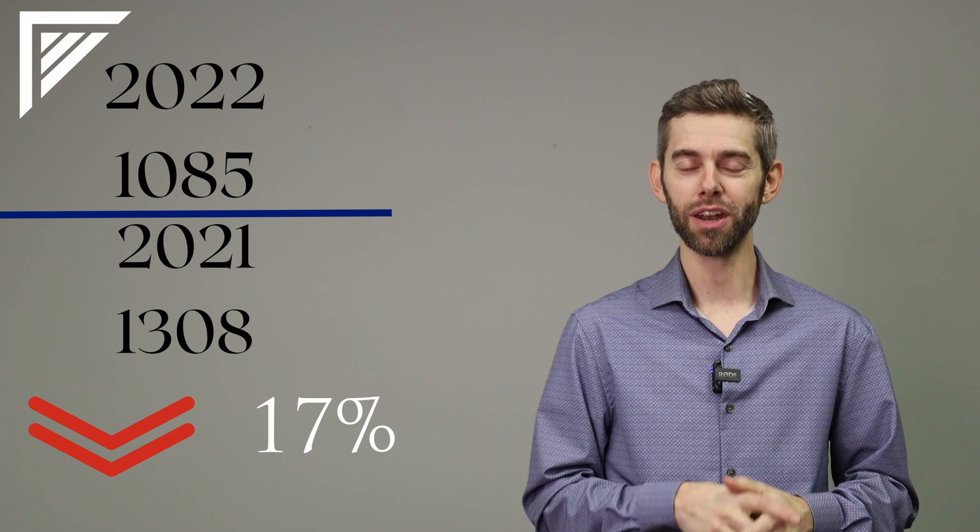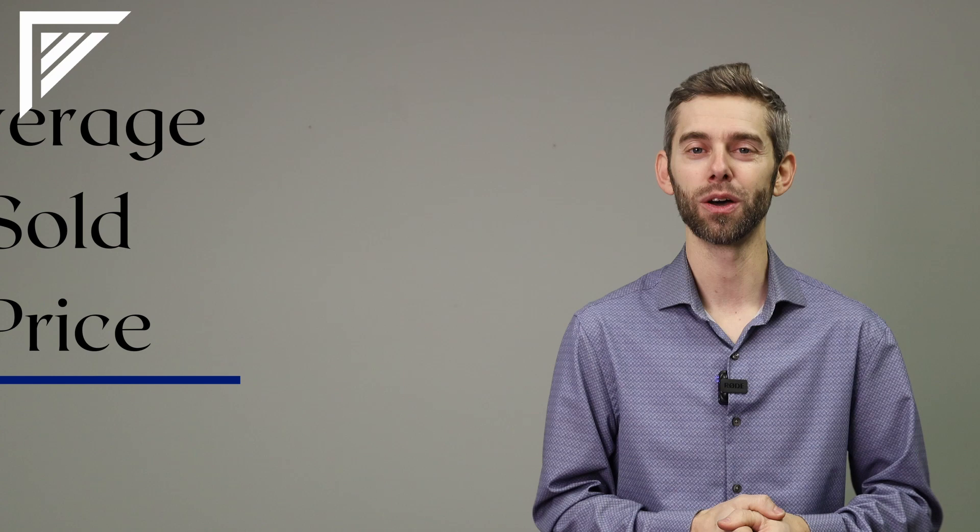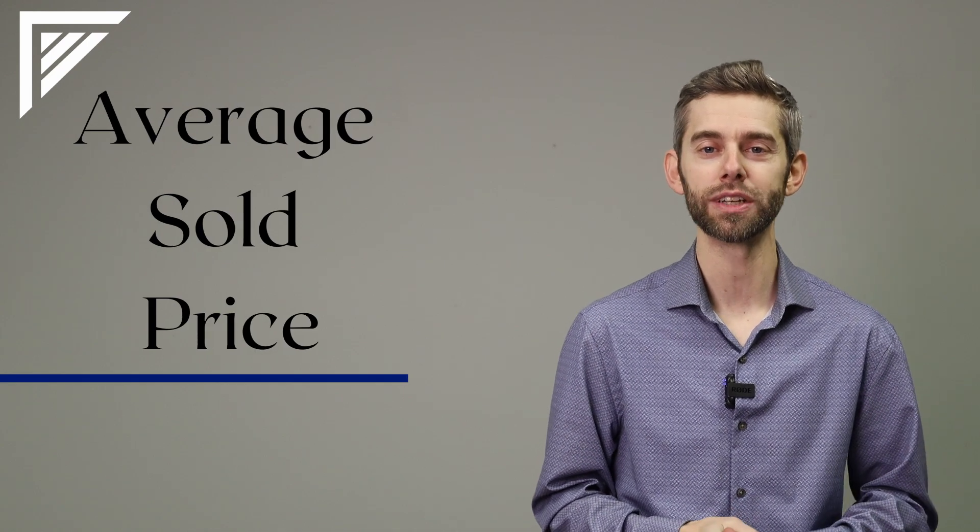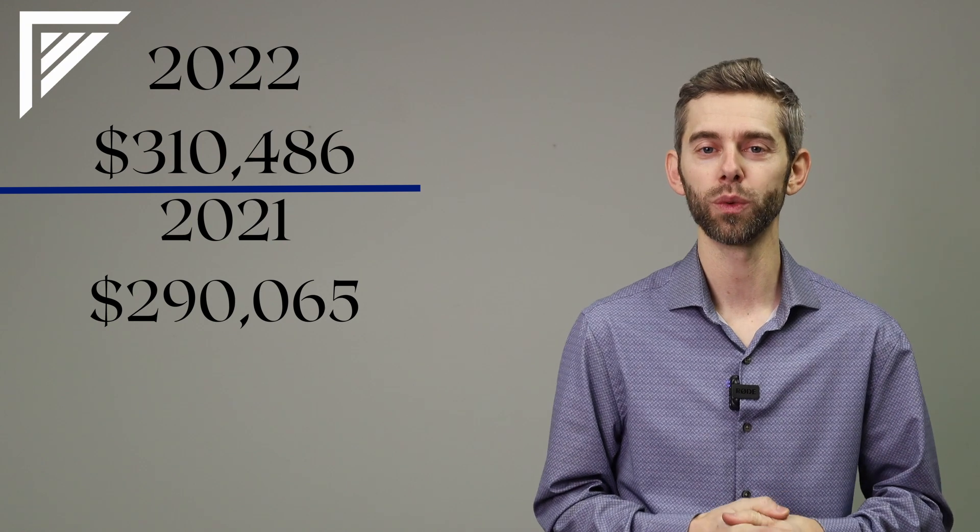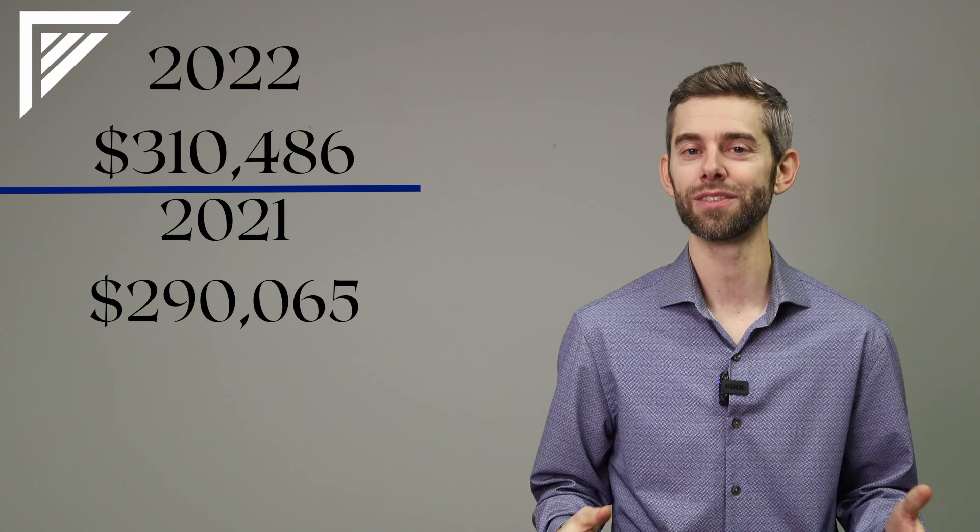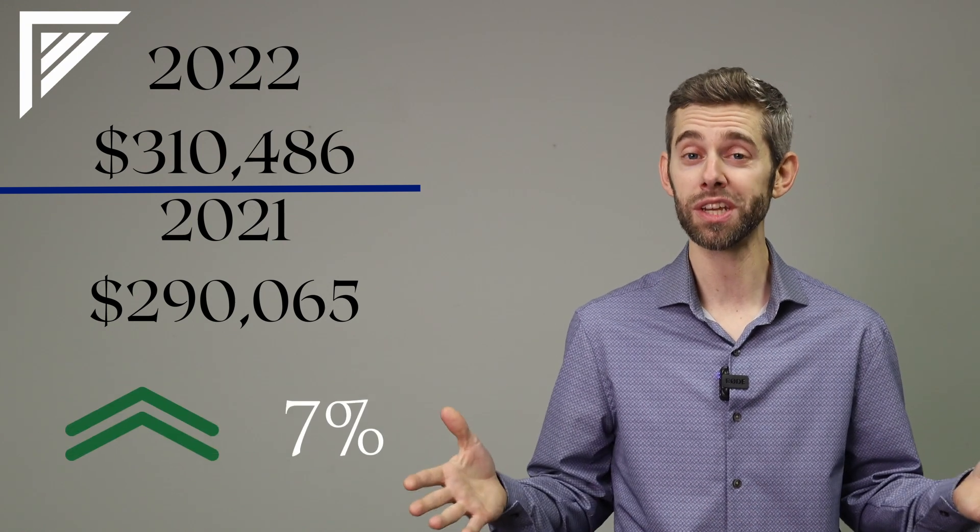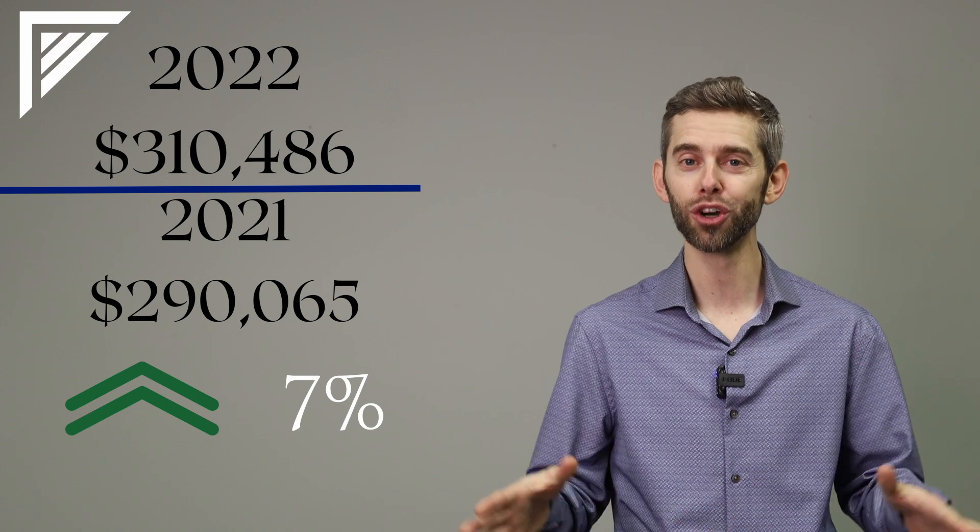But on the other hand, both the average and median home values were up. So let's start off with the average sale price. Last year, we were at $310,486, where in 2021, we were at $290,065, which is a 7% increase over the previous year. So a good, healthy increase.